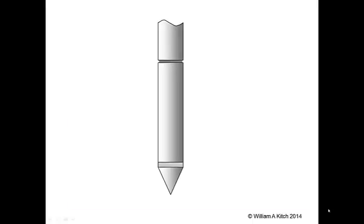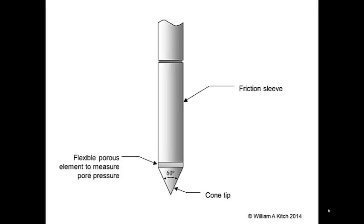The CPT probe consists of three separate parts: a 60-degree conical tip, which measures the end bearing resistance to penetration; a friction sleeve, which measures the side friction; and between the cone tip and the friction sleeve is a flexible porous donut-shaped element through which pore pressure measurements are made. The rods are attached at the top of the probe and used to push the probe into the soil. The earliest CPT probes did not contain the pore pressure element and measured only tip resistance and side friction. The probe shown here is called a piezo cone because it measures pore pressure in addition to tip resistance and side friction.